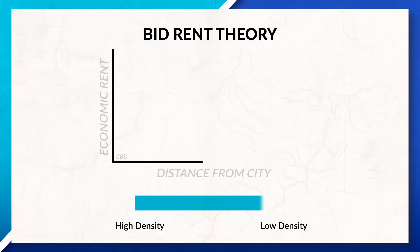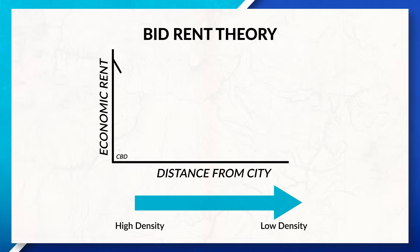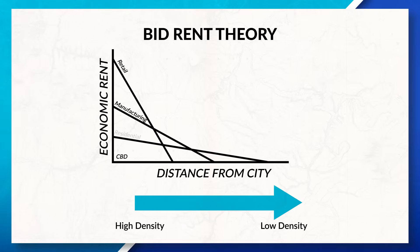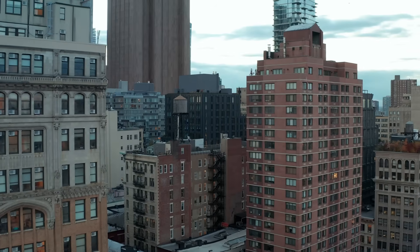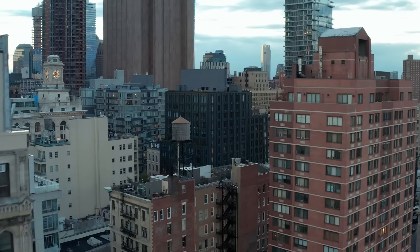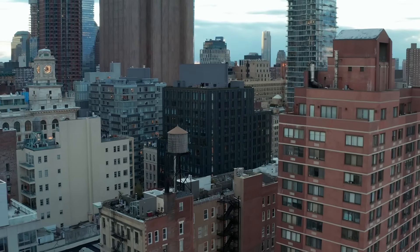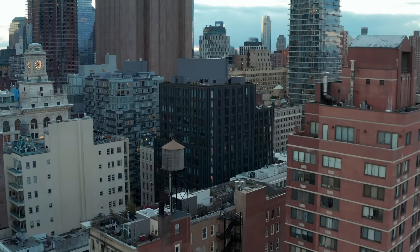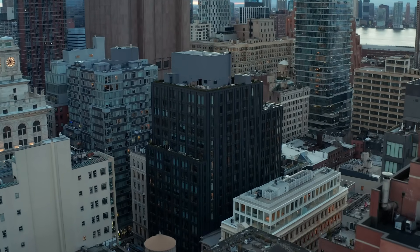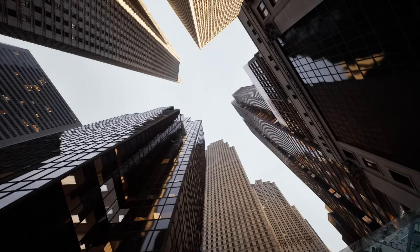When looking at the bid-rent theory, we can see that the closer we get to the CBD, the more expensive land gets, and the farther away from the CBD we are, the cheaper land is. All of this has to do with the availability of land and the amount of demand for it. The closer we get to the CBD, the more people there are and the less land is available, resulting in higher prices.